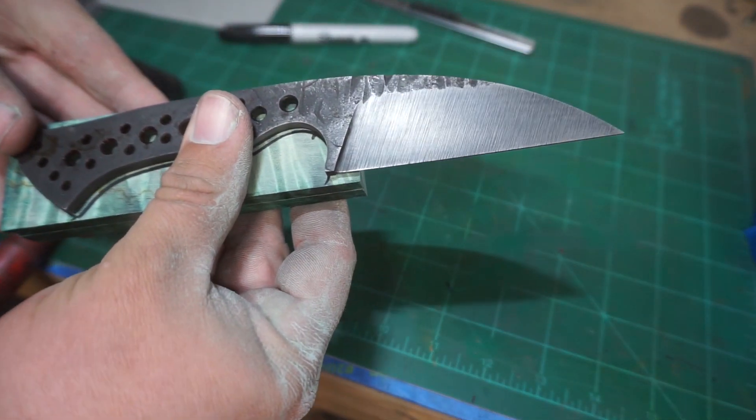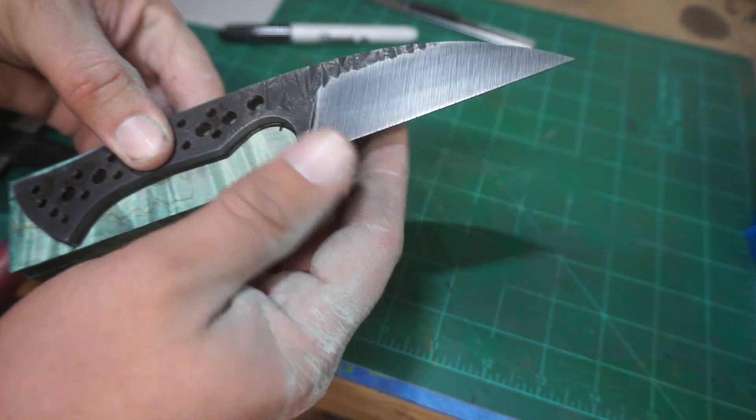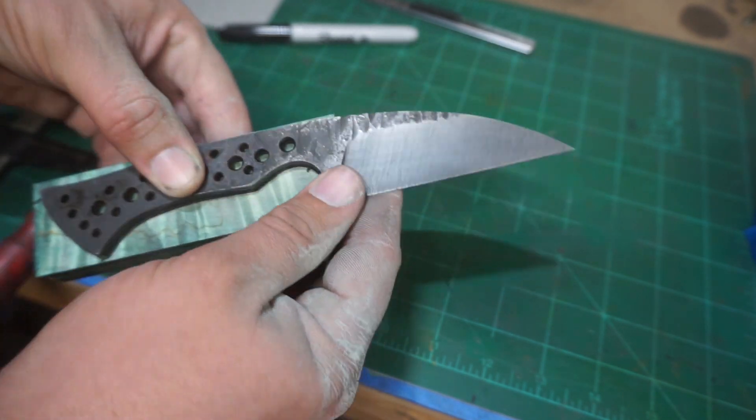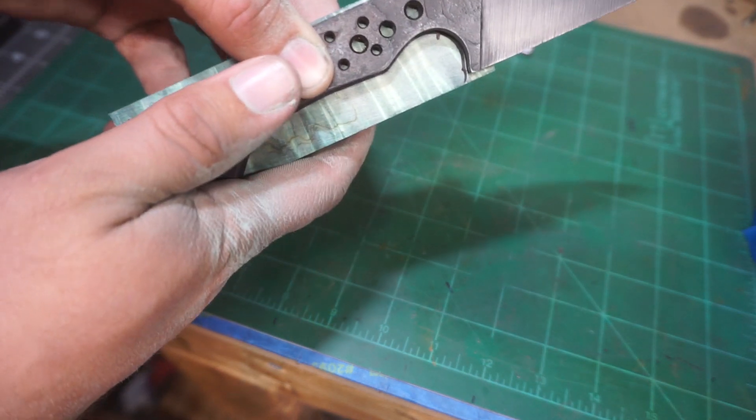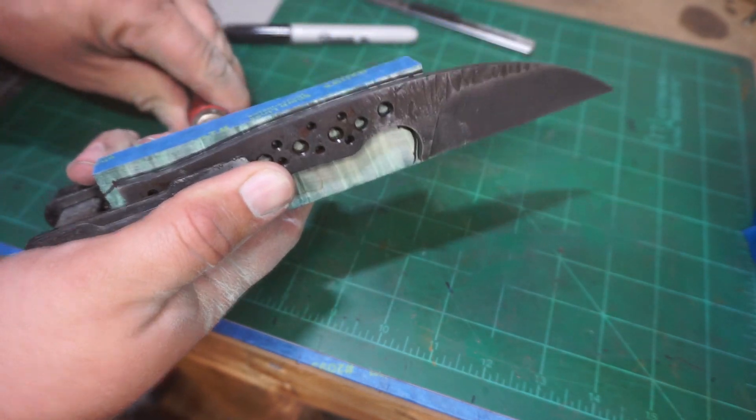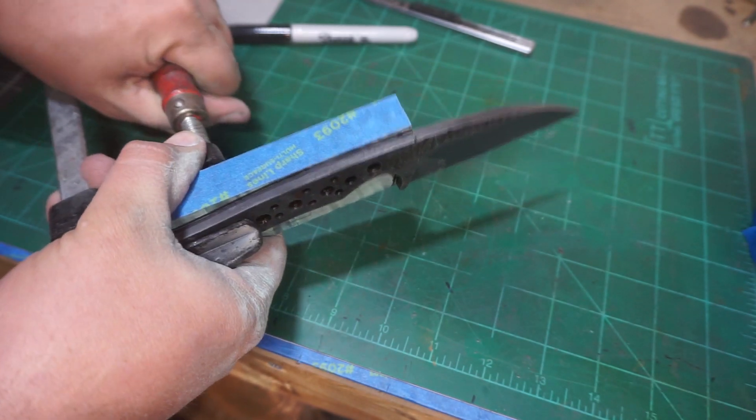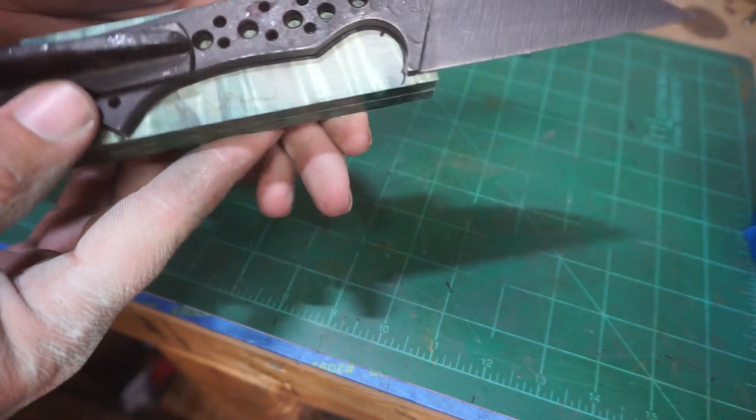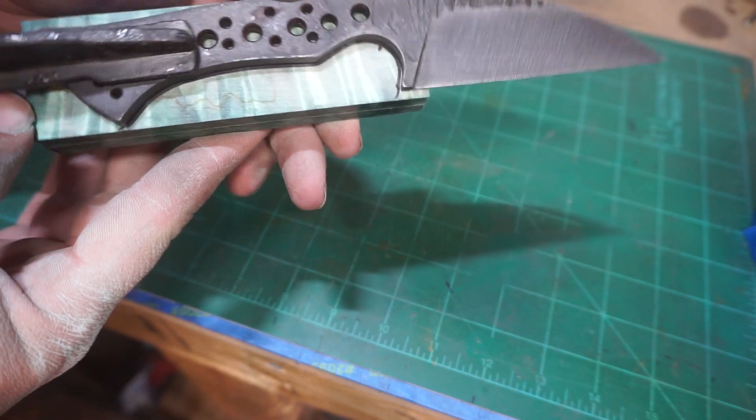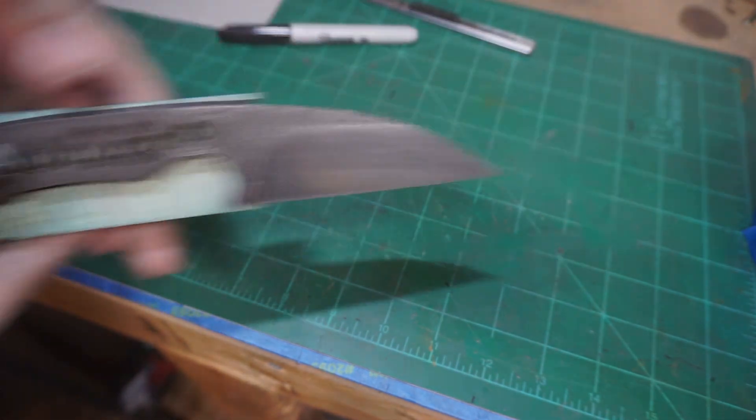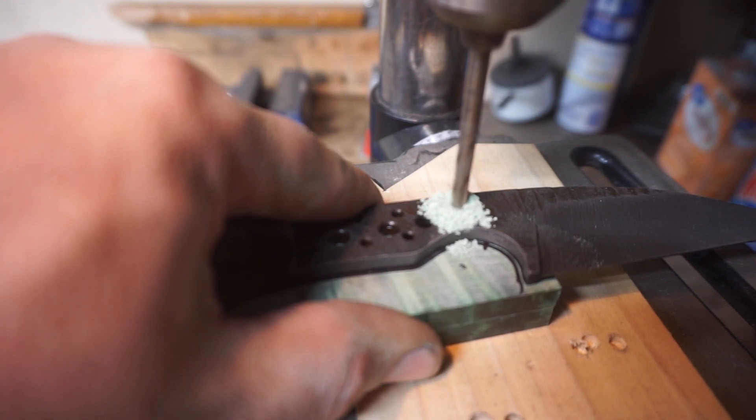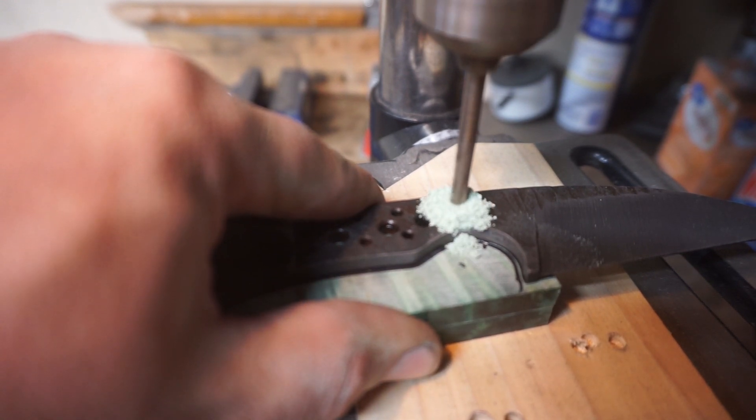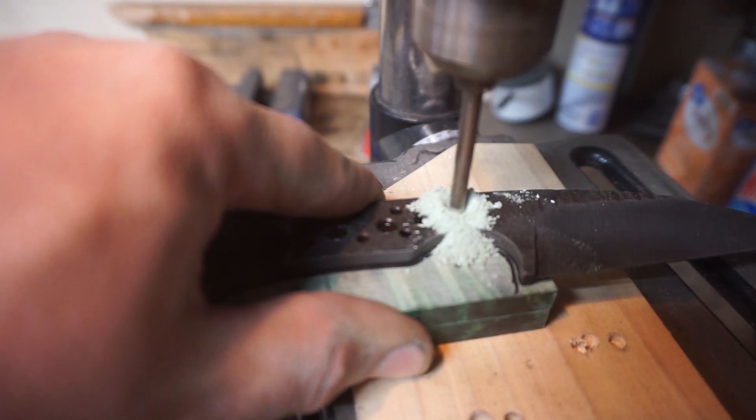Once we got everything kind of positioned where we want it, I'm going to go ahead and put a clamp on it so that we can start getting holes drilled through the scales. We're going to be using a 3/16 drill bit because we're using 3/16 black micarta pins.